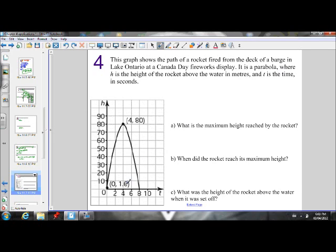So as time increases, the height of the rocket is going to change. It's going to go up at first, and then it's going to come back down. So we know that the x-coordinate is always going to stand for the time, and the y-coordinate, in this case, is going to stand for the height.